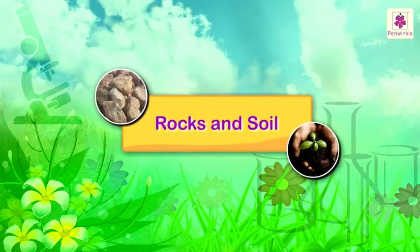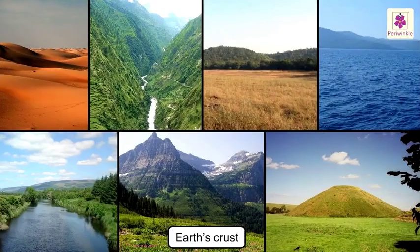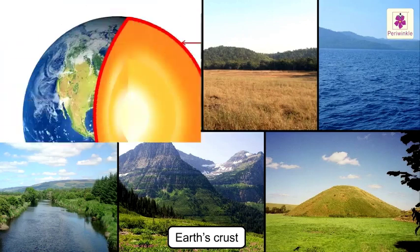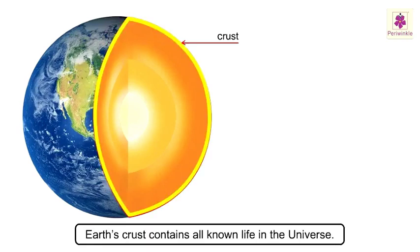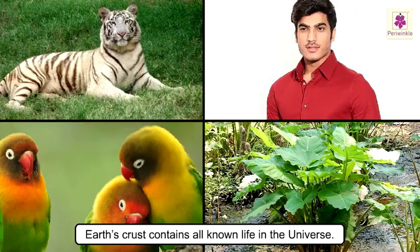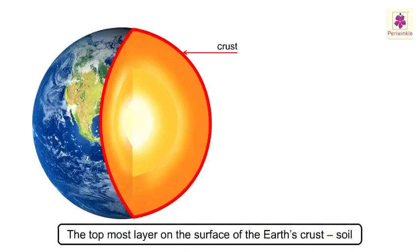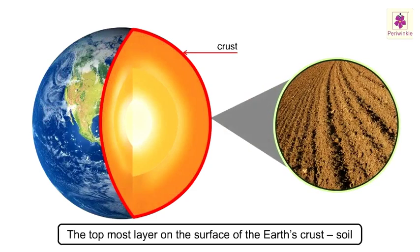Rocks and Soil. All the landforms that we see around us are a part of the earth's surface called the crust. It is the outermost hard layer of the earth and contains all known life in the universe. The top layer on the earth's crust in which plants grow is called soil. Let us learn more about it.